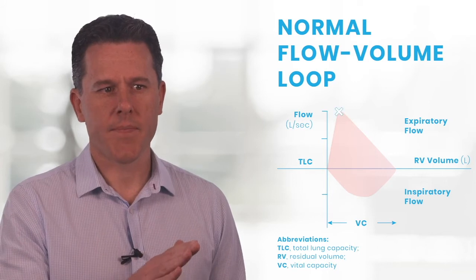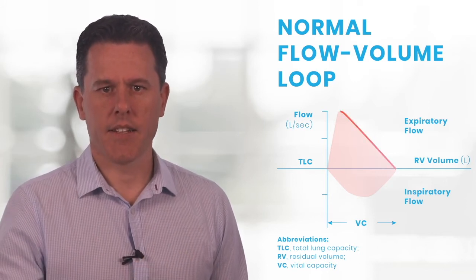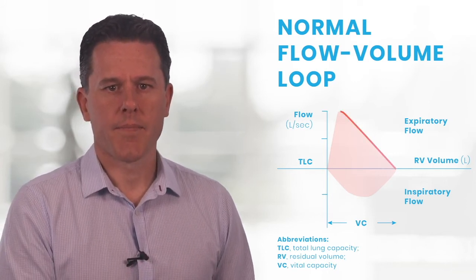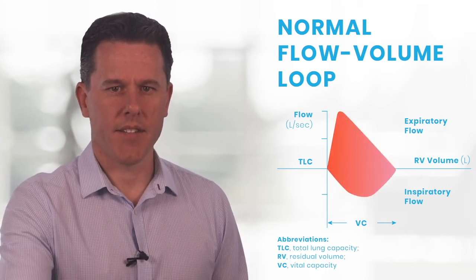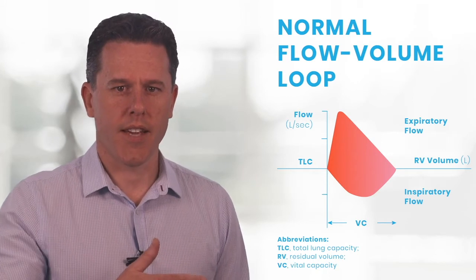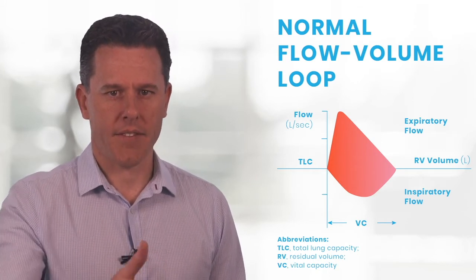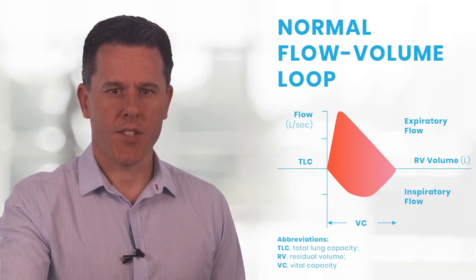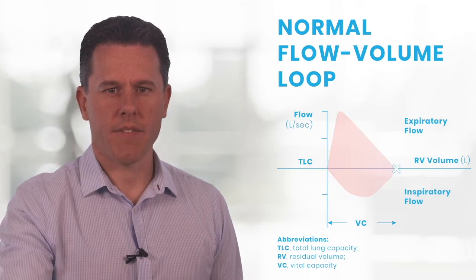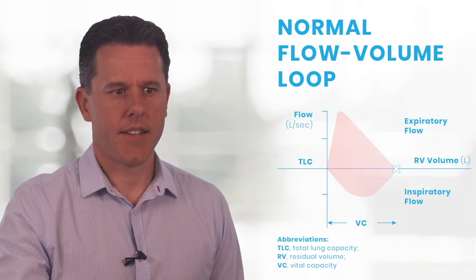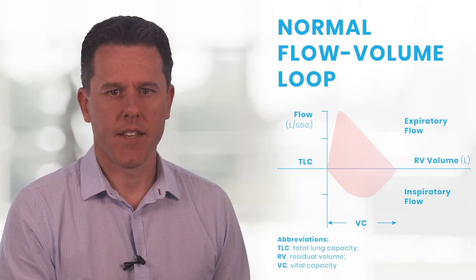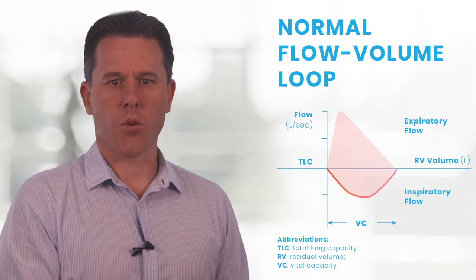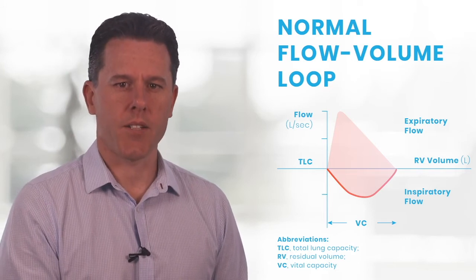Then it hits its peak and starts to tail off. The point at which the patient expires as far as possible, so has got the forced vital capacity out of the lung, is when the graph hits the horizontal axis, and that's marked there as residual volume. Then the patient inspires all the way back up to total lung capacity and we come back to where we started.